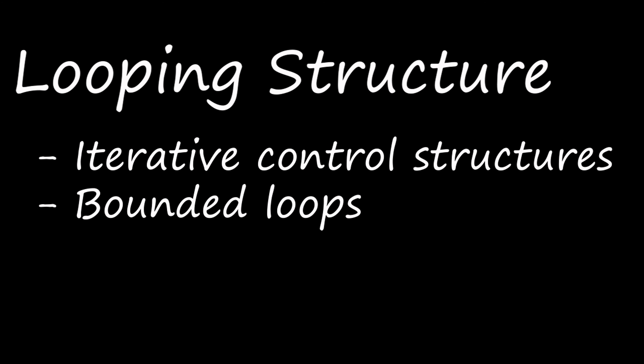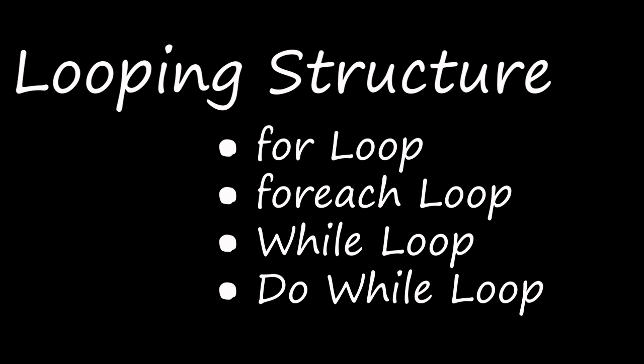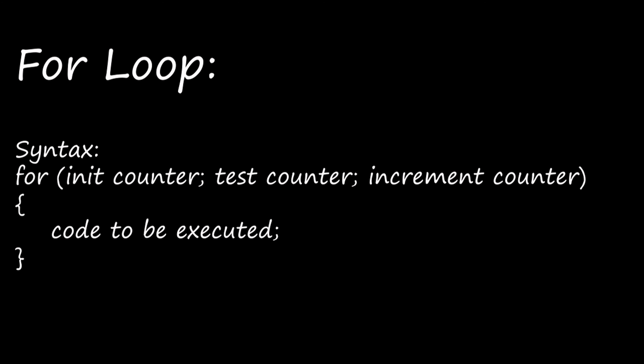Loops that iterate for a fixed number of times will be known as bounded loops. PHP supports four types of loops: for loop, for each loop, while loop, and do while loop. First, let's see what is for loop. For loop means when you know how many times the code or the block of statements has to be executed, you can use this for loop.